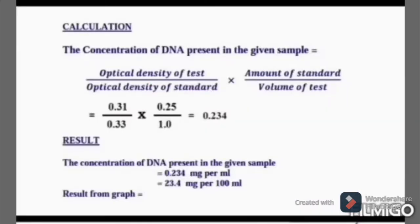Now the calculation: concentration of DNA is equal to OD of test T1 divided by OD of standard, multiplied by the amount of standard and divided by the volume of test T1. This is equal to 0.234 milligram per ml, and multiplied by 100 gives a final concentration of 23.4 milligram per 100 ml.